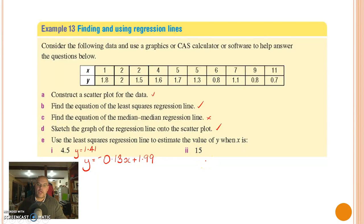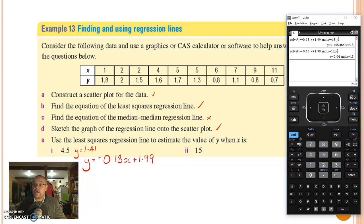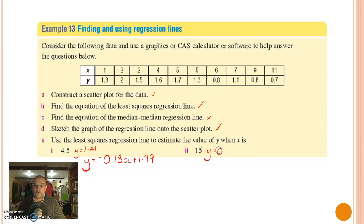Our second one: when x is equal to 15, what's the value of y? Bring the calculator back up. You can type that solve formula back in again, or if you want the shortcut method, highlight the previous entry, push enter, and there it is. Move the cursor across to the initial x value, delete that and put in the next x value which is 15, push enter. This time when x is equal to 15, y is equal to 0.04.